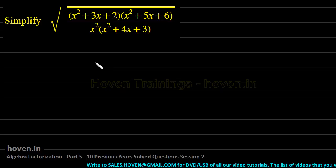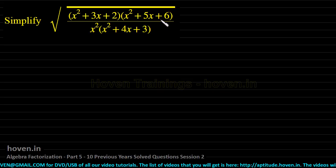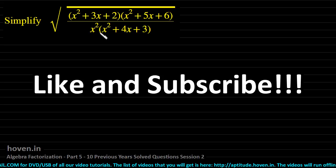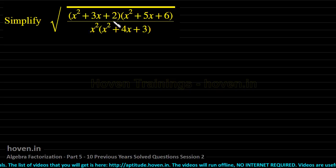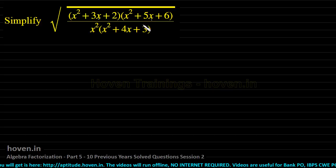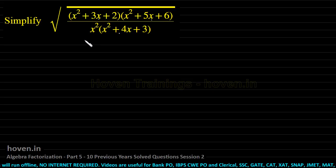Let us start with our first question: simplify the whole square root of (x²+3x+2)(x²+5x+6) divided by x² times (x²+4x+3). We have to simplify it — obviously some common factors will be there in the factors of each expression, those factors will cancel out and things will be simplified.